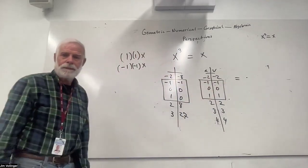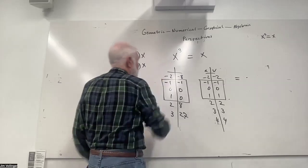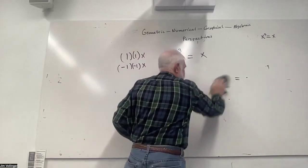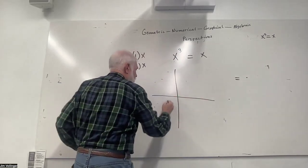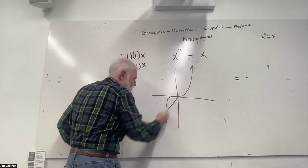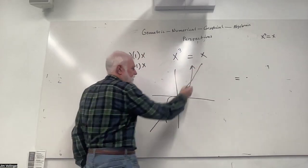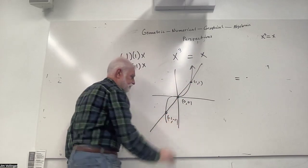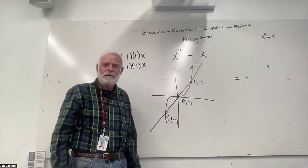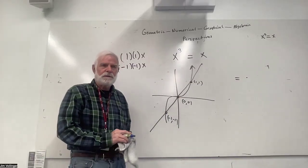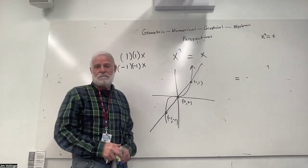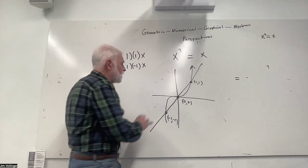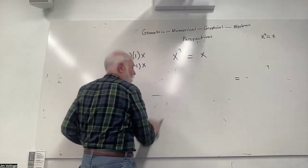From a graphical perspective, this is what a cubic looks like. And y equals x is a straight line. Where do they intersect? At (1,1), (0,0), and (−1,−1). Somebody might have considered that early on in the evolution of this discipline — I think it's an evolution, with one concept built on top of another.